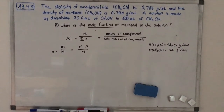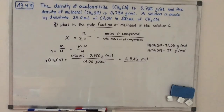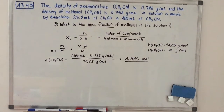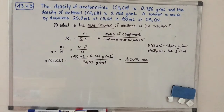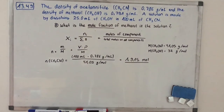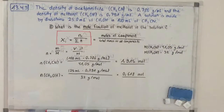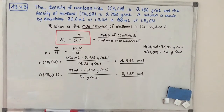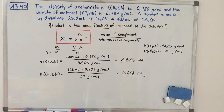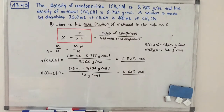Now we have everything we need to calculate the number of moles. For acetonitrile: 100 mL multiplied by 0.786 g per mL, divided by 41.05 g per mol, gives 1.915 mol. For methanol, using the same approach but with its respective values, we get 0.618 mol.